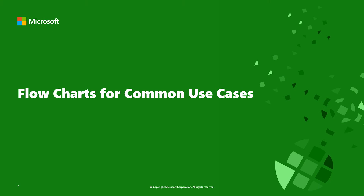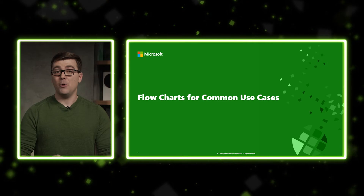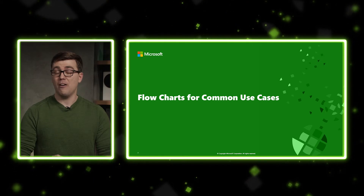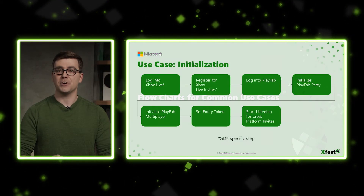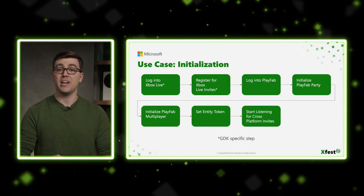Let's briefly go over some high-level flows for the most common multiplayer scenarios. These examples assume that you're running on the GDK platform and using PlayFab Party for networking and voice. Because PlayFab Multiplayer is a cross-platform solution, any GDK-specific steps will be marked with an asterisk.